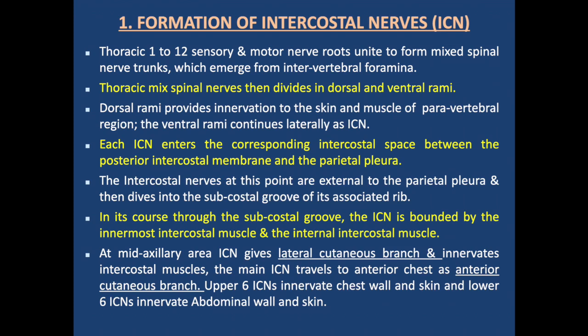Each intercostal nerve enters the corresponding intercostal space between the posterior intercostal membrane and the parietal pleura. The nerve then dives into the subcostal groove of its associated rib. In its course through the subcostal groove, the intercostal nerve is bounded by the innermost intercostal muscle and internal intercostal muscle. At the mid-axillary area, the intercostal nerve gives a lateral cutaneous branch and innervates intercostal muscles, while the main nerve travels anteriorly as the anterior cutaneous branch.